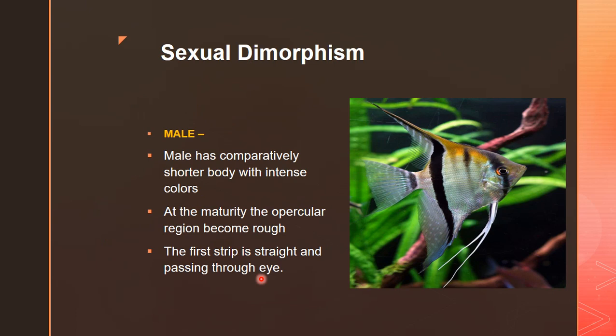Next is sexual dimorphism. In aquarium fishes generally, the male is shorter than the female — this is an important new point. The male has a shorter body with intense color. At maturity, the operculum becomes rough in the male. Similarly, as in Katla during the breeding season of June, July, August, the operculum becomes rough in the male but smooth in the female. In the male, the first stripe is straight and passes through the eye.